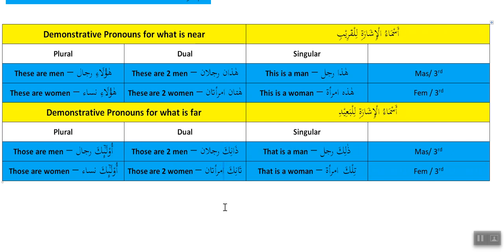Note: this alif is really a hamza — alif can be a vowel or a letter. Here it's a letter called hamzatul-wasil, meaning it's only pronounced if you start with it. When joining a word before it, you skip it. So we say 'tanika-mra'atani,' skipping that hamzatul-wasil. If you pronounce it separately that is technically a mistake.